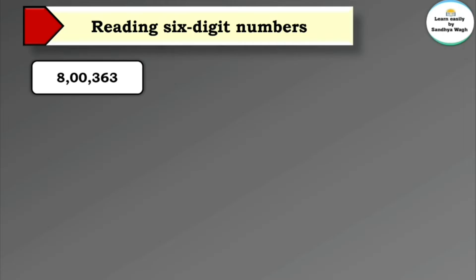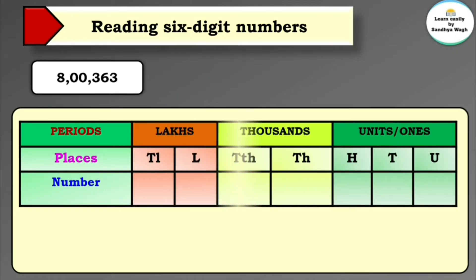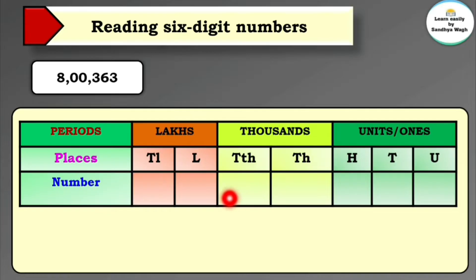Now let's read this number: 8,00,363. Three is in the units place, six is in the tens place, three is in the hundreds place, zero is in the thousands place, again zero is in the ten thousands place, and eight is in the lakhs place.